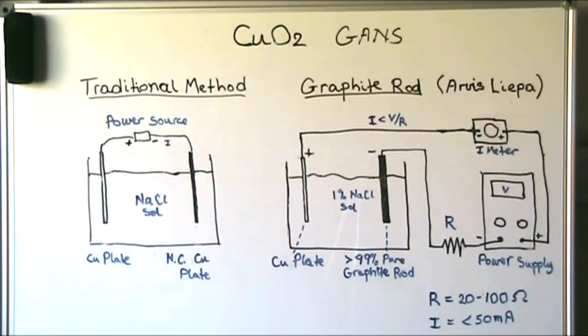With copper oxide GANS production there are also two basic methods. The traditional method involving nano-coated copper plate and pure copper plate in a salt solution, and then there is the graphite rod case where it's just a graphite rod and a copper plate in a salt solution.